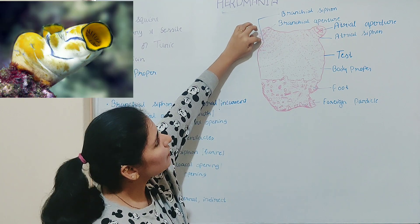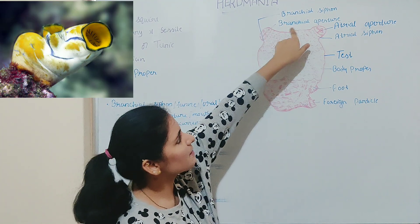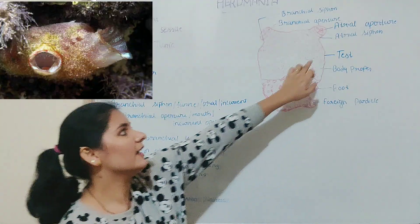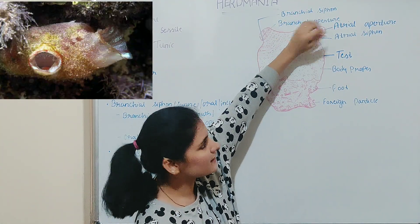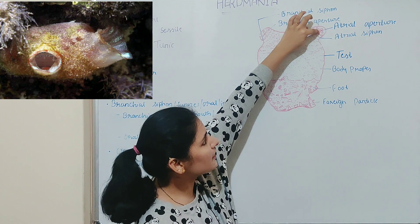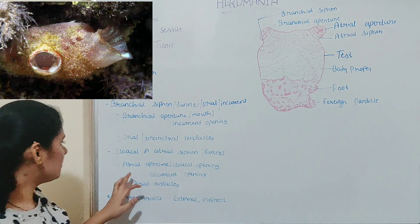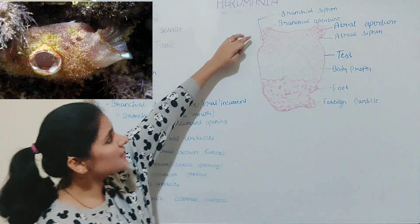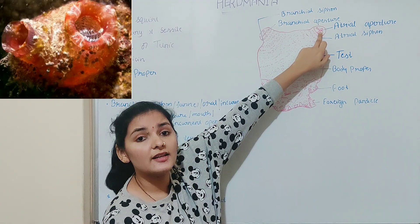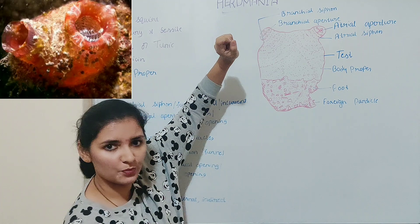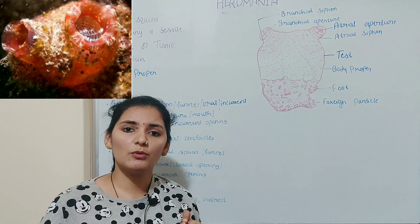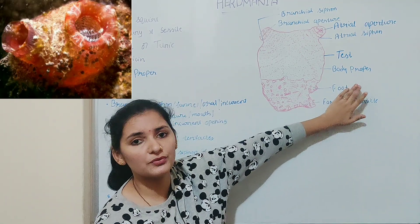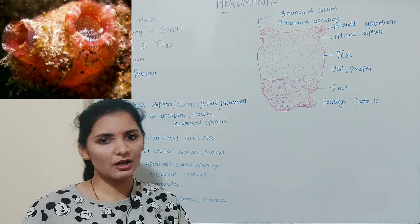The branchial siphon is smaller and faces outward, with an aperture at the center called the branchial aperture, also known as the mouth or incurrent opening. The atrial siphon is larger and faces downwards, with an opening called the atrial aperture, also known as the cloacal opening or excurrent opening. Both apertures are guarded by four lips or lobes formed by elastic test, which contract and close upon any slight disturbance in the surrounding water.